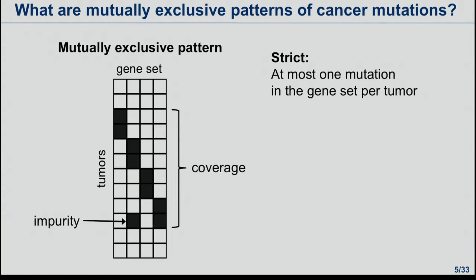What are mutually exclusive patterns of cancer mutations? You can see such patterns in matrices of gene mutations where tumors are arranged on one side and genes on the other. You see mutual exclusivity when at most one mutation in the gene set occurs per tumor. Tumors showing this are said to be covered by mutual exclusivity, and violations to that strict definition are called impurity of the mutual exclusive pattern.